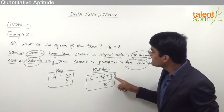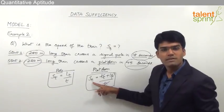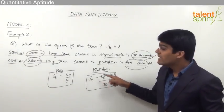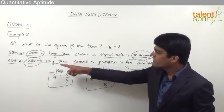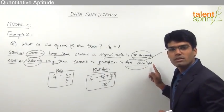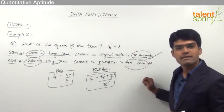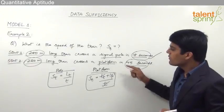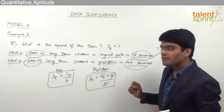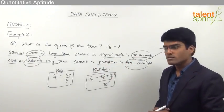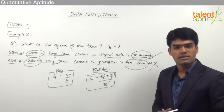Since the length of the platform is not given, we cannot find the speed of the train. Statement 2, though it gives the length of the train and the time taken to cross the platform, will not help us find the answer, because we also need the length of the platform. So Statement 2 alone is not sufficient.